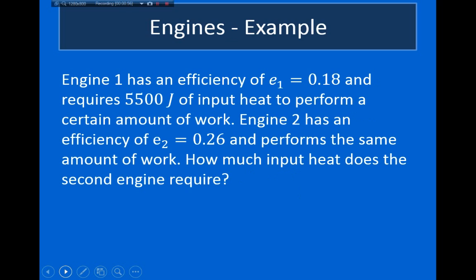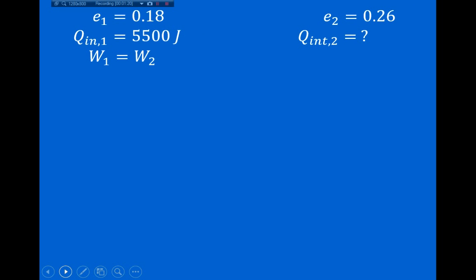Let's look at an example. Engine 1 has an efficiency of 18% and requires 5,500 joules of input heat to perform a certain amount of work. Engine 2 has an efficiency of 26% and performs the same amount of work. We need to determine how much heat must be put into engine 2. We use the fact that efficiency equals work output divided by heat input, so work equals efficiency times heat input.